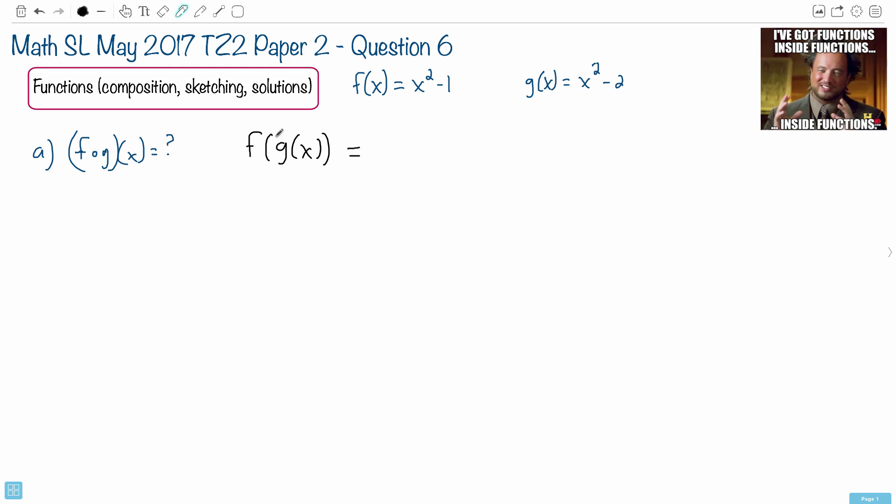So the trick to doing this is, look at your outside function. Outside function is f. It means I'm going to follow the rules of f. It says take some junk and square it, and subtract one from it. That's the rule of f of x. However, we don't just feed it an x, we feed it a whole function g of x. That's the whole trick to this one here.